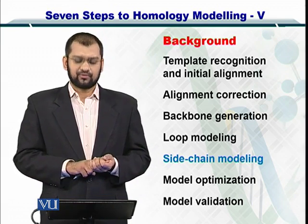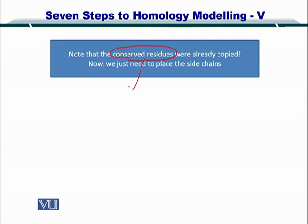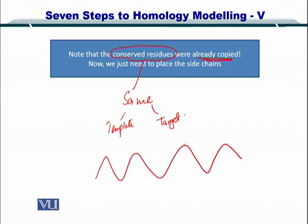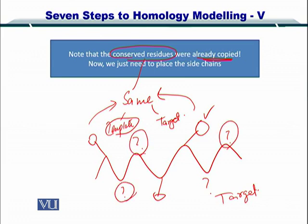The conserved residues — those that were the same between the template and the target — have already been copied. So you now have a structure with a backbone with some side chains added while some side chains are missing. The ones already added correspond to positions where the target and template shared the same amino acid. This is your target structure at the moment, and now we are going to look at how we can insert the remaining side chains.